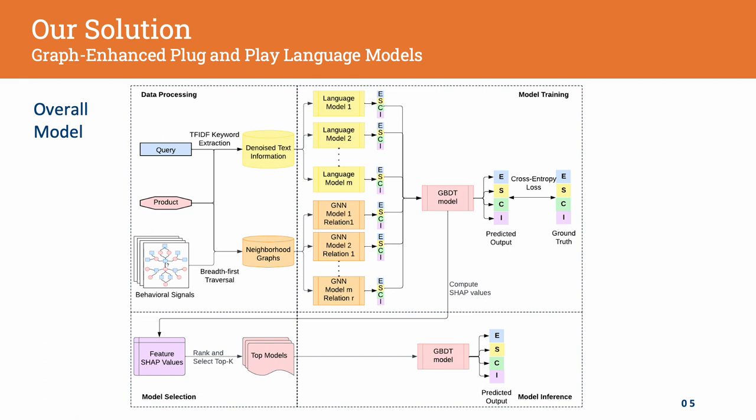Thus, to this end, we introduce a plug and play ensemble of graph and language models. Here we take a selection of GNN and LM models, each individually trained on the target objective. Then we take an ensemble of their outputs and train a GBDT model over these outputs.